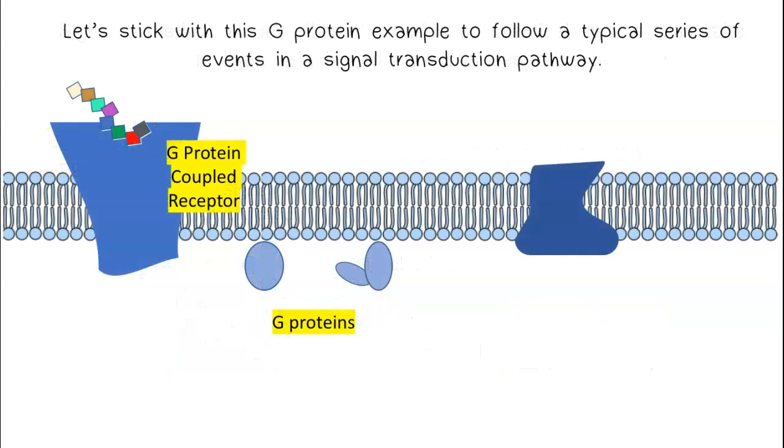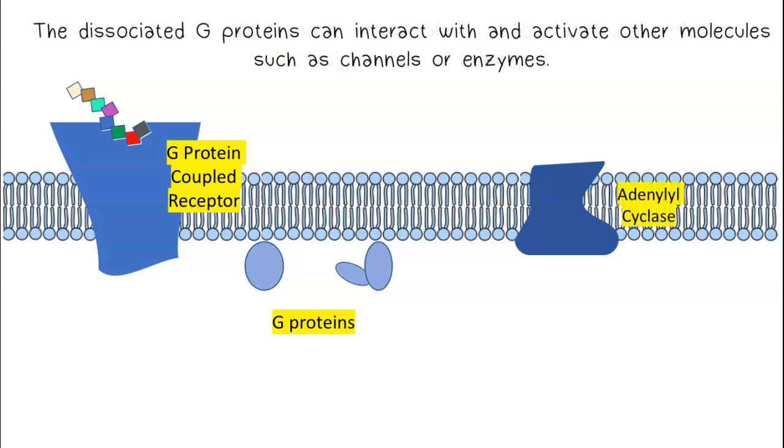Let's stick with this G protein example to follow a typical series of events in a signal transduction pathway. The dissociated G proteins can interact with and activate other molecules such as channels or enzymes.